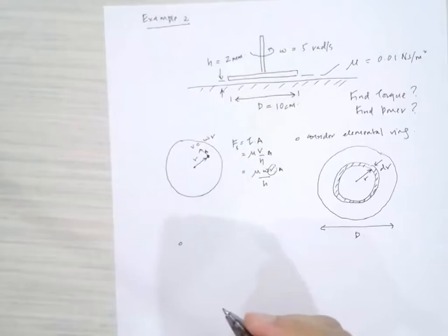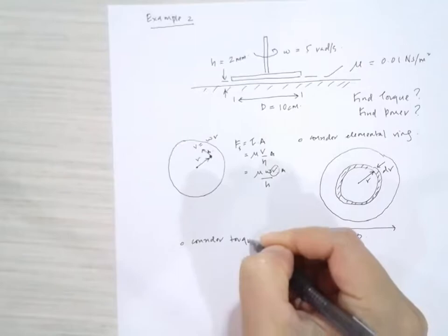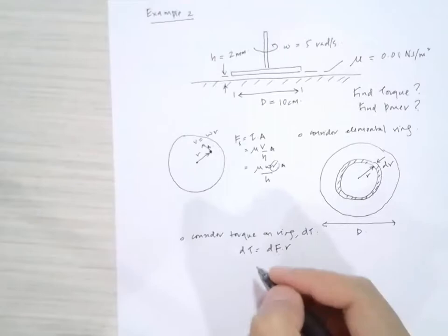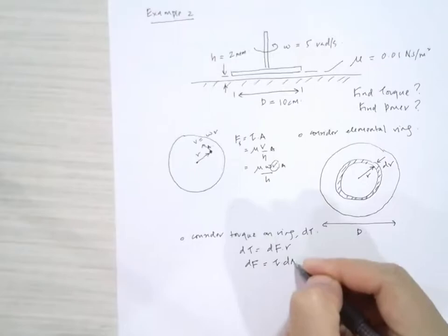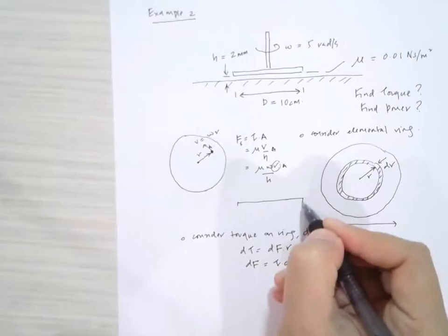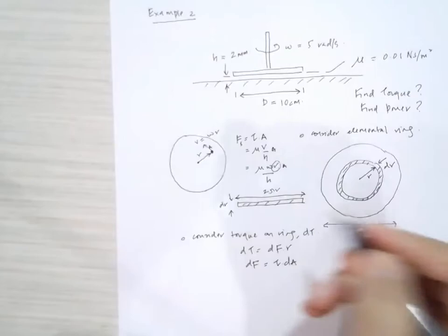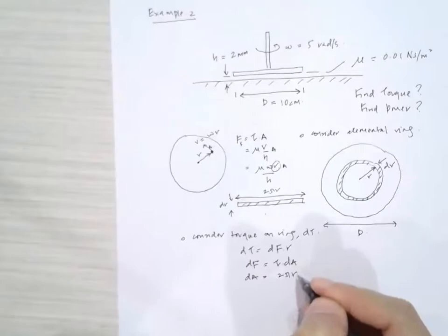Consider the torque on an elemental ring. If I draw the surface of the disk, whereby the diameter is equal to d, and take a ring at radius r, the shear forces there are constant because the value of r is constant. The torque is equal to dF times r, and dF equals tau times dA. If we open up the ring, the area element dA equals 2 pi r dr.